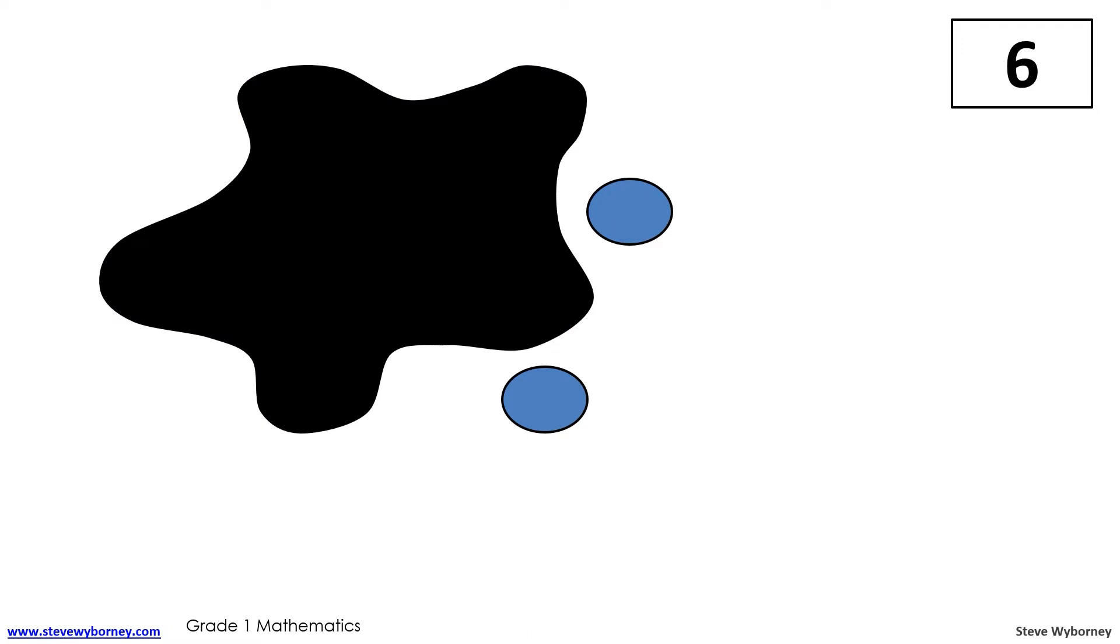How many dots are under the splat? Maybe you thought about six dots in total and you took away the two dots that are still shown to learn that there are four dots under the splat. What number sentence could match this strategy? The number sentence that would match this strategy is six minus two equals four because we started with six, took away the two dots shown and finished with four dots under the splat.